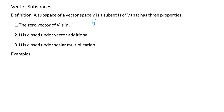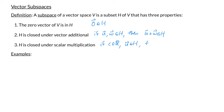First, we need the zero vector to be in H. Second, we need H to be closed under vector addition — this means that if I have any two vectors U and W in H, then their sum U plus W is also in H. Lastly, we need to check that H is closed under scalar multiplication, meaning that for any scalar C and any vector U in H, C times U is also in H.